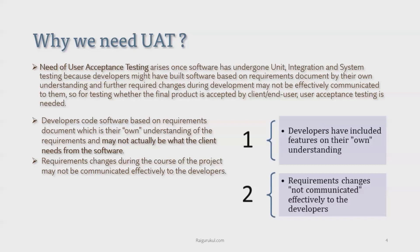Let's consider two examples. First, developers have included features based on their own understanding which the client might not accept, or if they have considered only one side of the coin — but what if there is another side that should be incorporated? These types of scenarios will be tested by the UAT team. Generally, the QA team tests based on development-side functionality only, but business cases need to be covered by the UAT team.